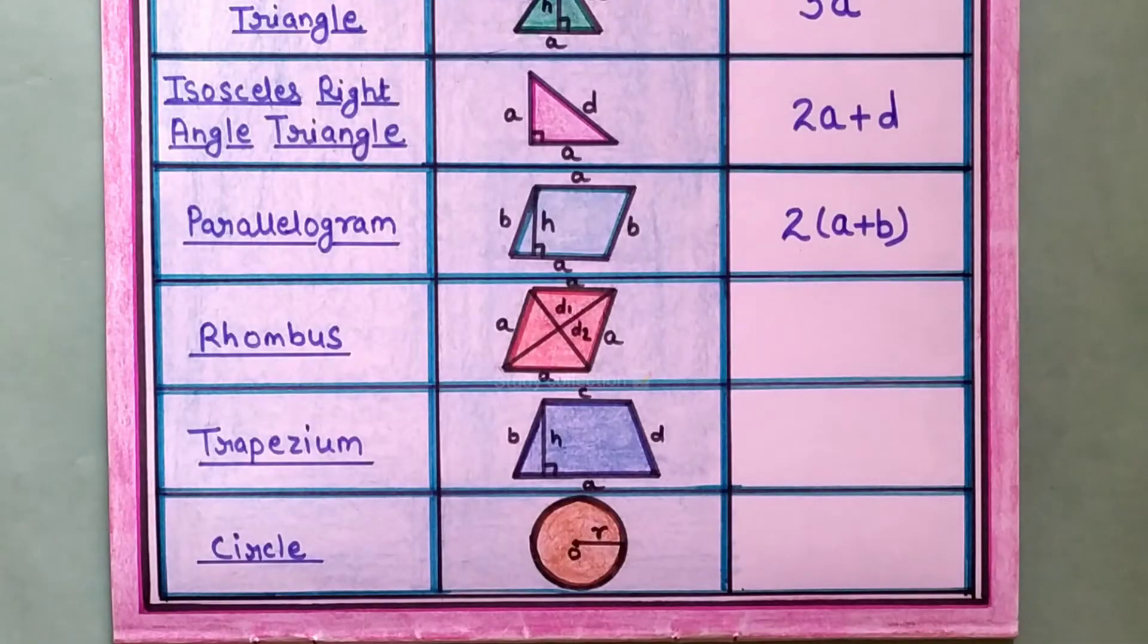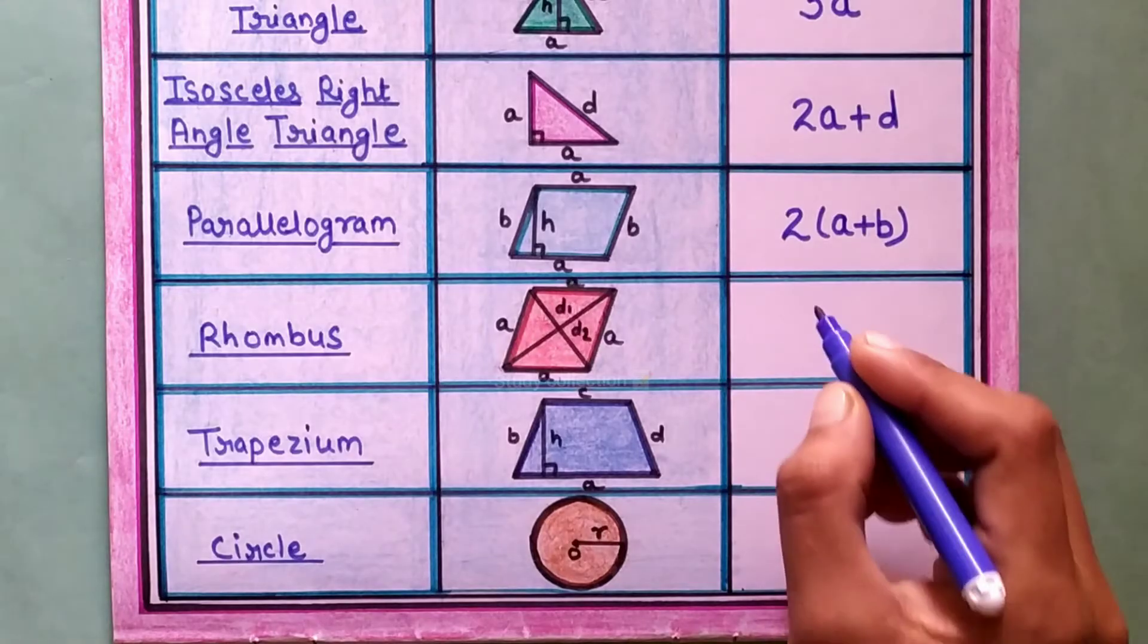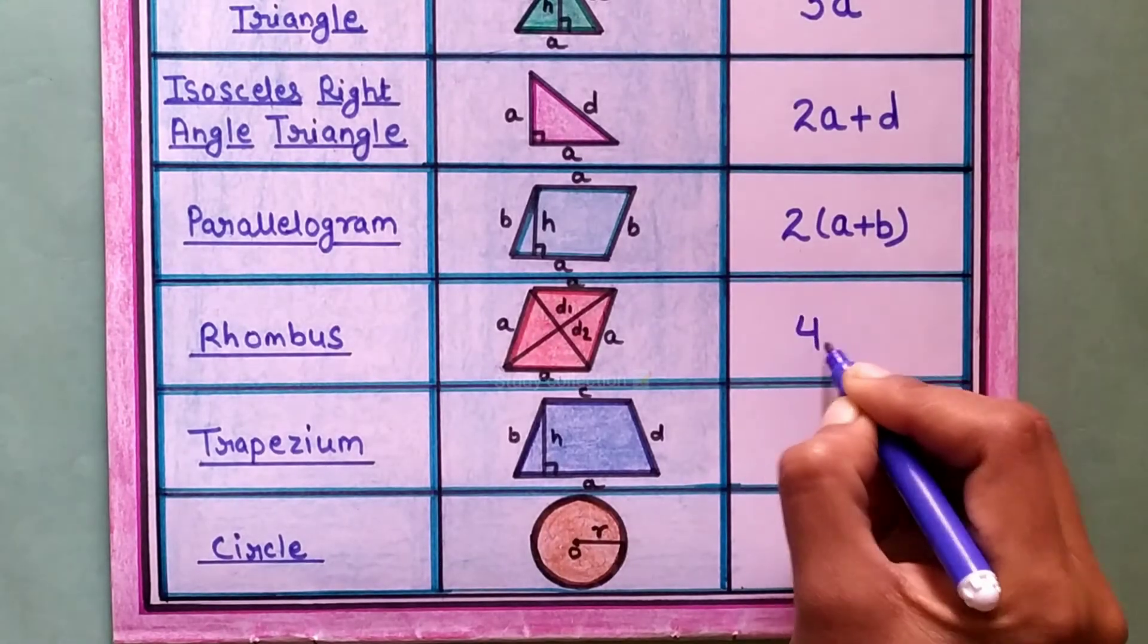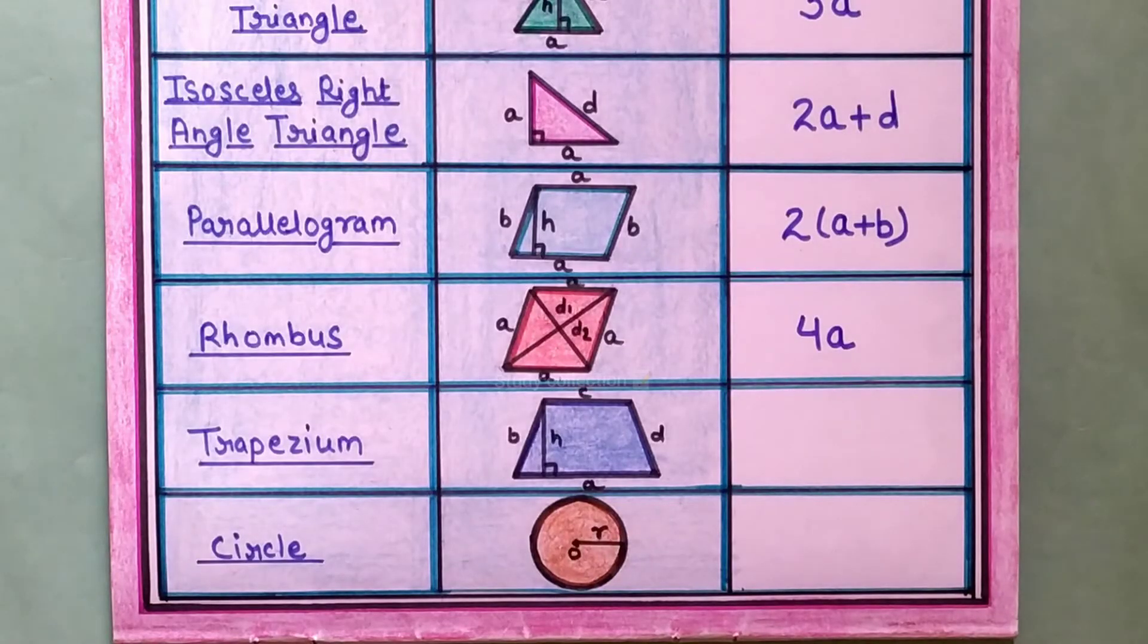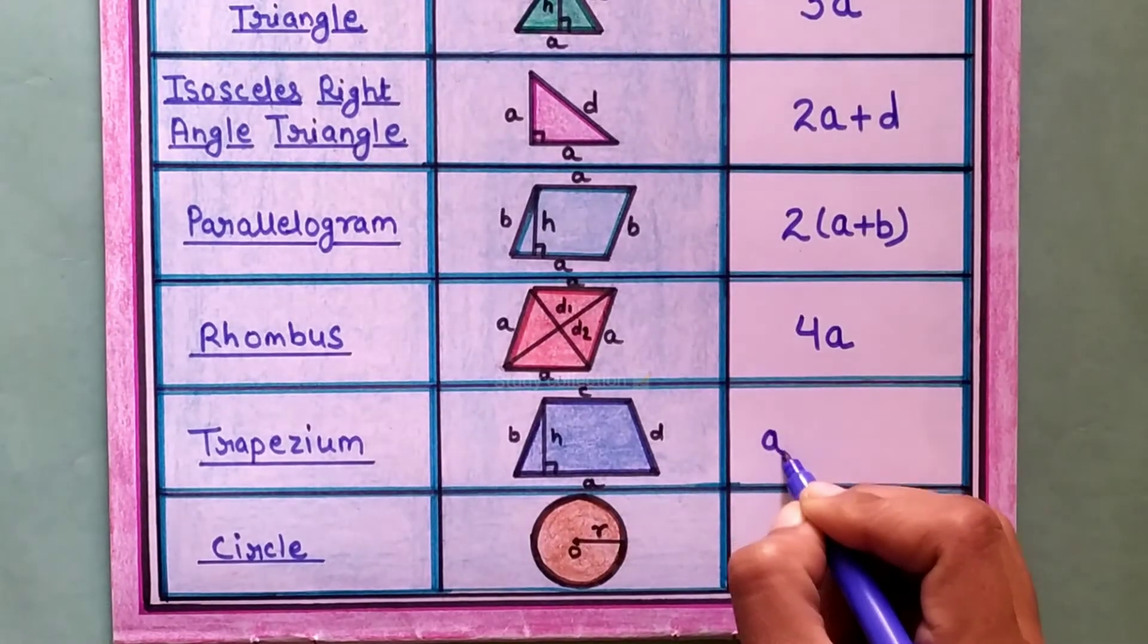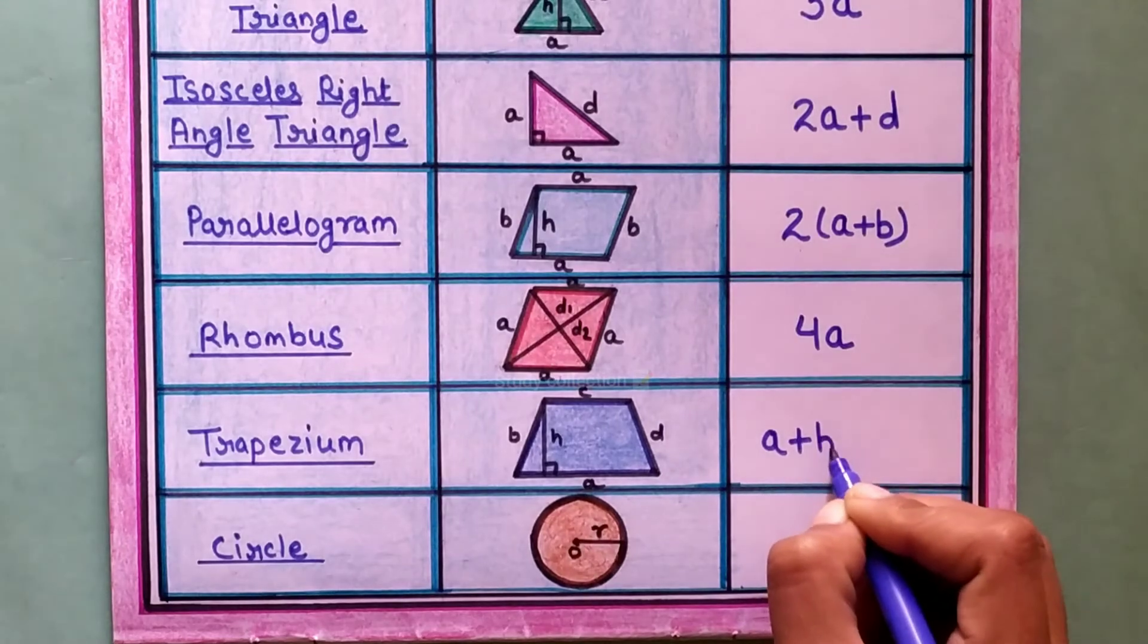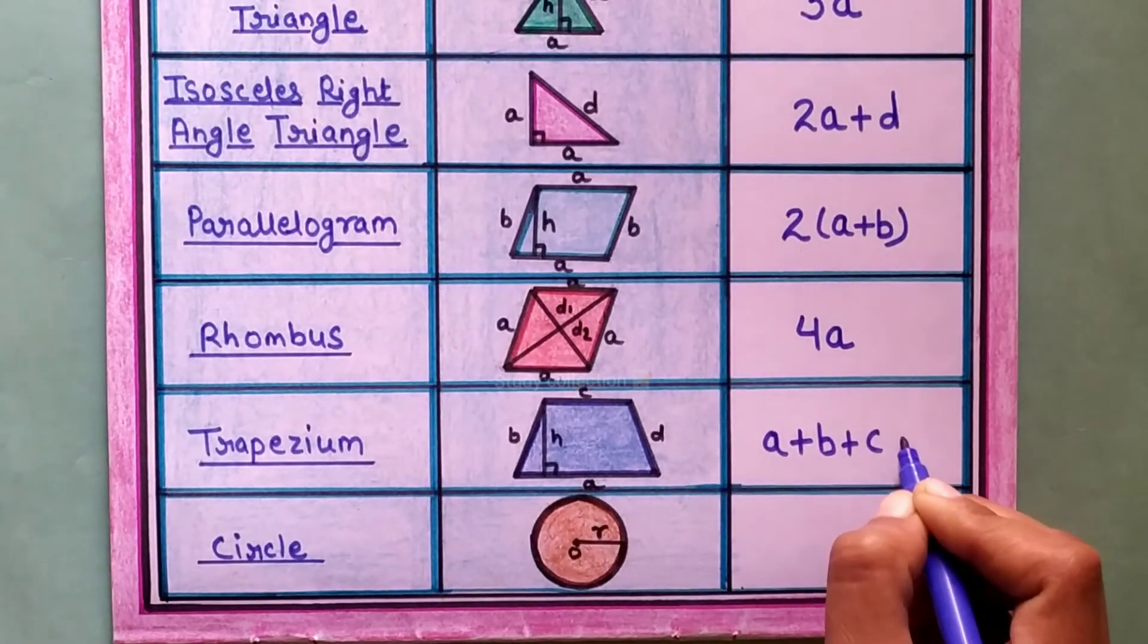Next shape is rhombus. The perimeter formula of a rhombus is 4 into A. Now second last is trapezium. Its perimeter formula is A plus B plus C plus D.